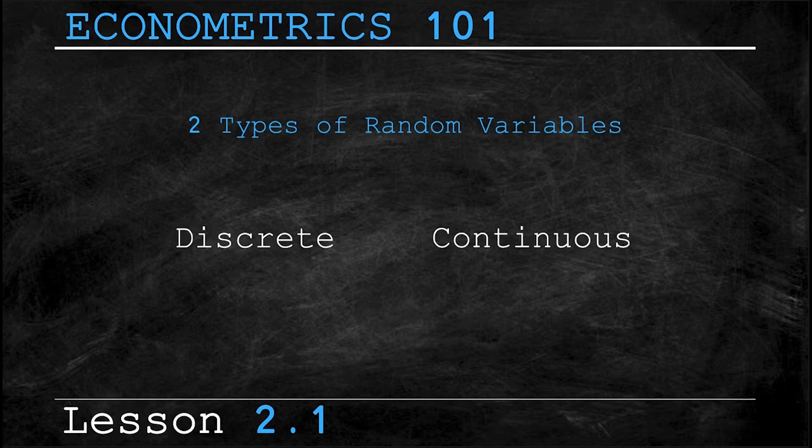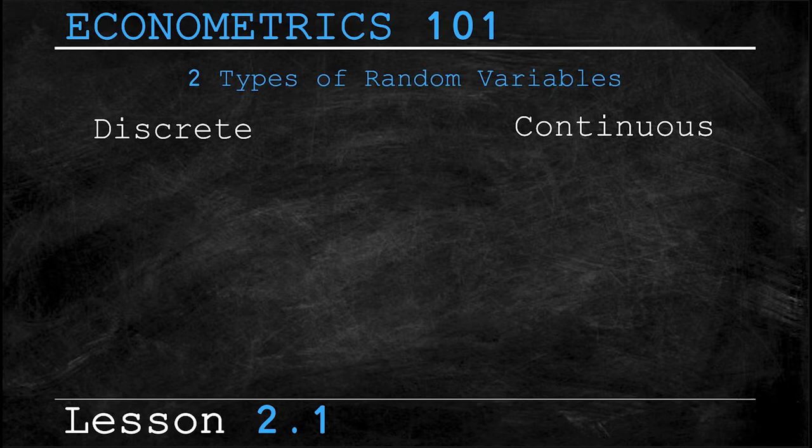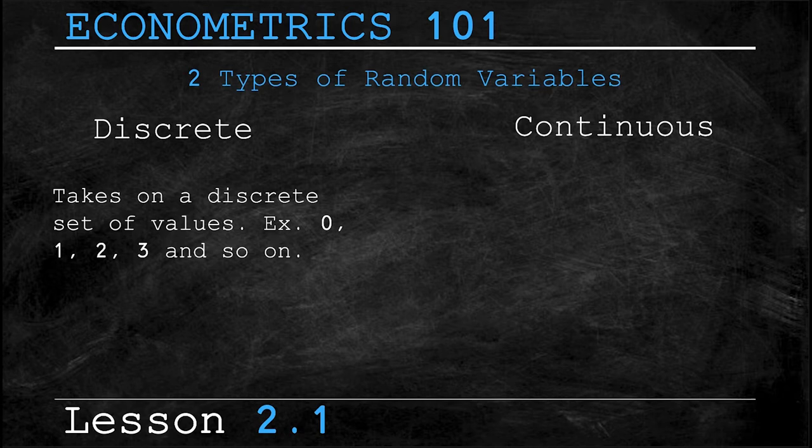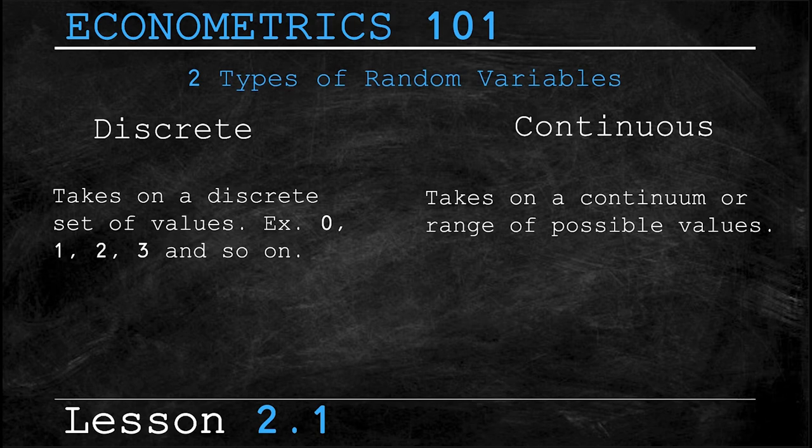A discrete random variable takes on a discrete set of values, typically an integer for example zero, one, two, three, and so on and so forth. Continuous variables however take on a continuum or a range of possible values. If this seems tough to understand stick with us as we're about to make it a whole lot easier with something called probability distribution.